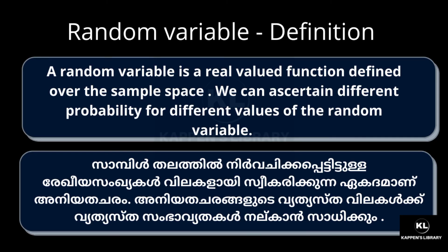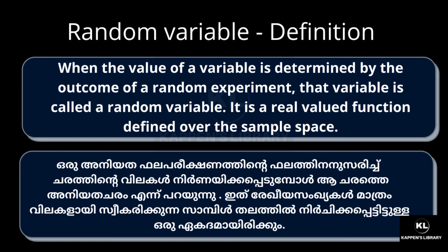A random variable is a real-valued function defined over the sample space. We can ascertain different probabilities for different values of the random variable. When the value of a variable is determined by the outcome of a random experiment, that variable is called a random variable. It is a real-valued function defined over the sample space.